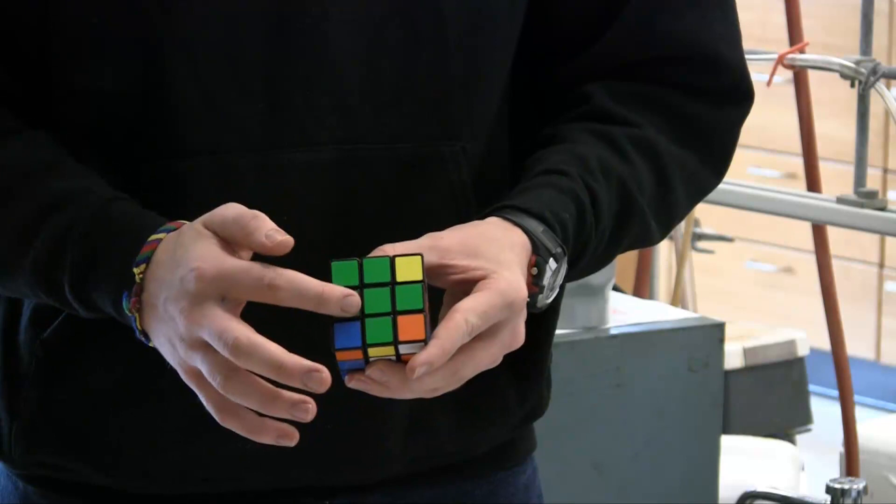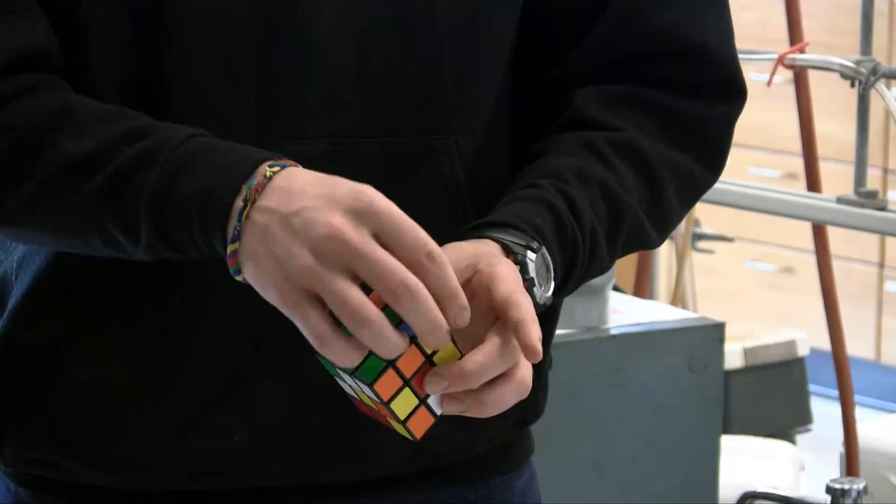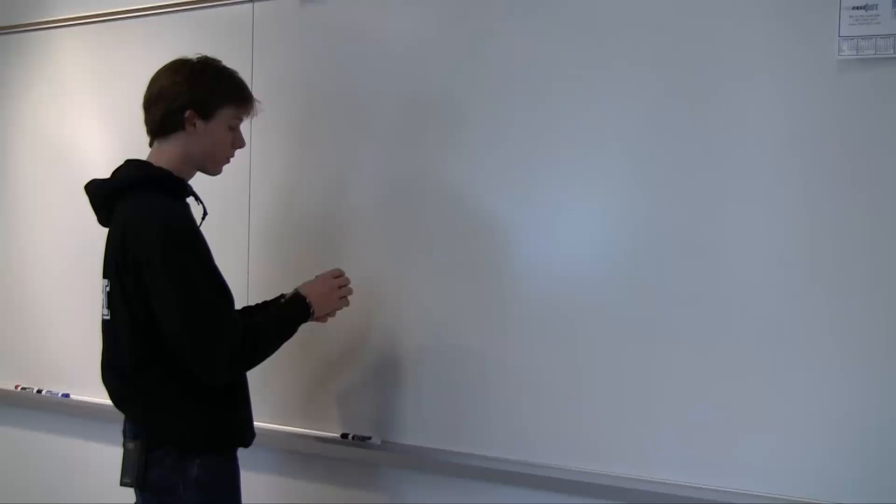That part is done by intuition, by just messing around with the cube for a while and figuring out how things move in a basic format. Then after that you can start using algorithms, and what you're trying to do is input the correct corners in their positions.